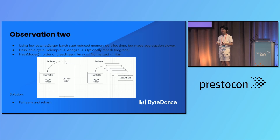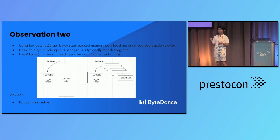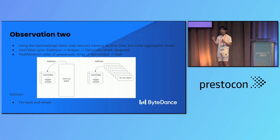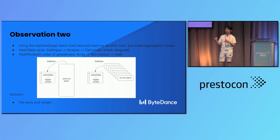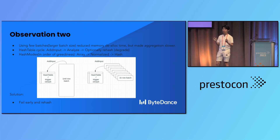We thought once we made that change there would be no performance differences, but that was not the case. After changing to a super large batch size, it did reduce memory deallocation time, but overall the time spent in aggregation became slower. Specifically, when using a super large batch, vector hashing becomes slower.